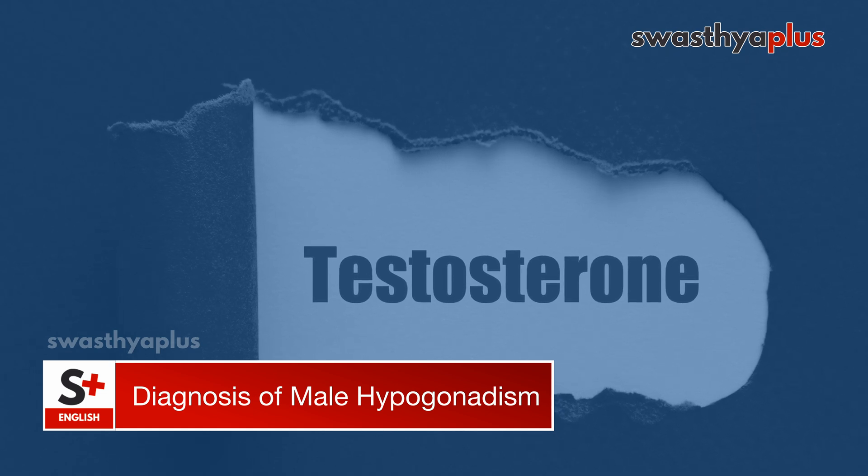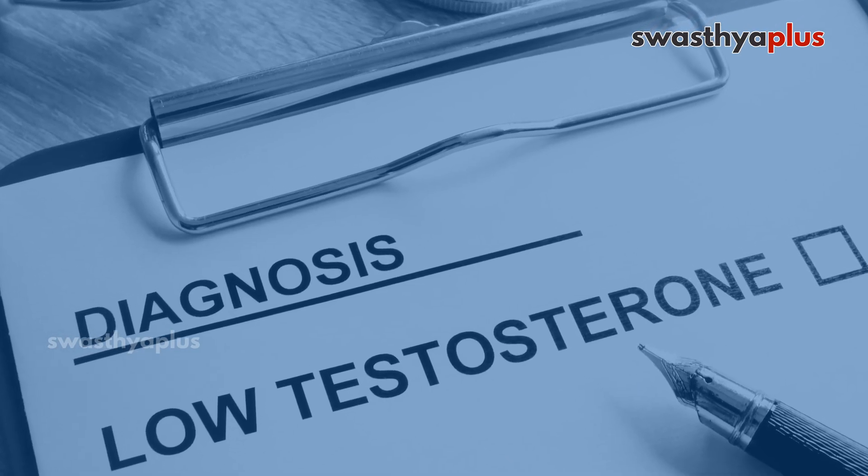To diagnose hypogonadism, we measure fasting morning total testosterone levels, repeated twice if borderline. A testosterone level above 300 ng/dL excludes hypogonadism. Levels of 200–300 ng/dL require repeat testing to confirm the diagnosis. A level below 200 ng/dL confirms hypogonadism. After confirmation, LH and FSH levels are measured along with other hormonal parameters to differentiate primary from secondary hypogonadism, and a pituitary MRI may be required.